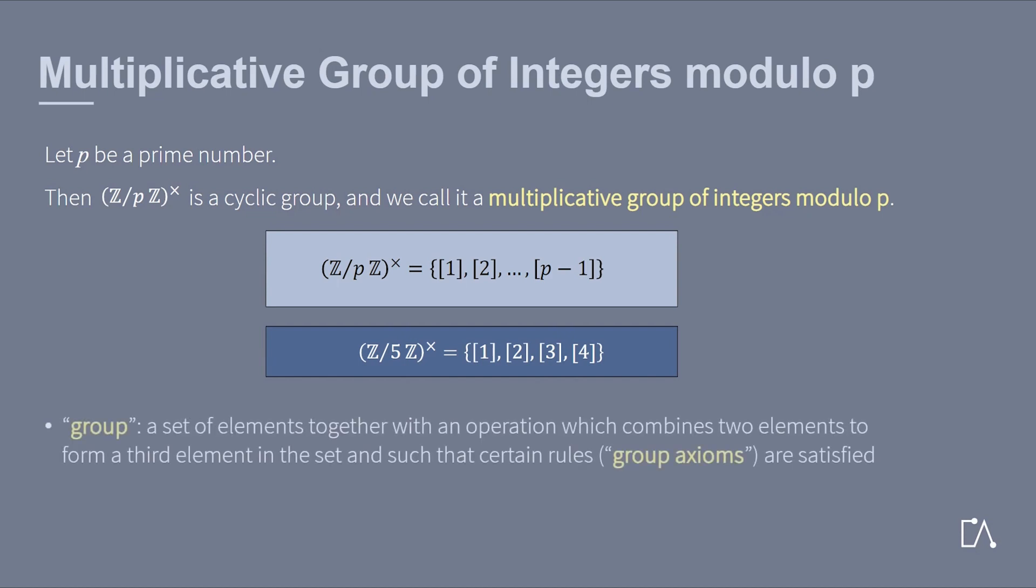A group is defined as a set of elements together with an operation which combines two elements from this set to form a third element within this set. This operation has to satisfy the so-called group axioms.